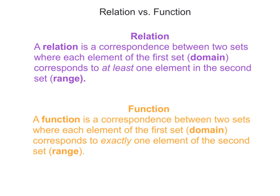Let's take a look at the definition between a relation and a function — two very key concepts. A relation is a correspondence between two sets where each element of the first set, called the domain, corresponds to at least one element of the second set, which is the range. The key part is 'at least one.' A relation is any set of ordered pairs — any way we can take two different sets and pair the elements of each together.